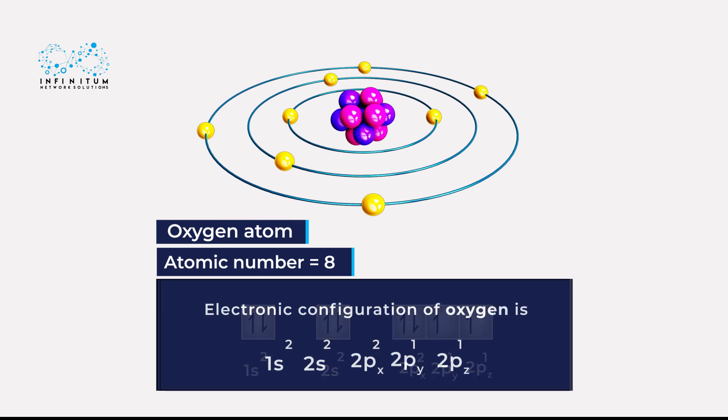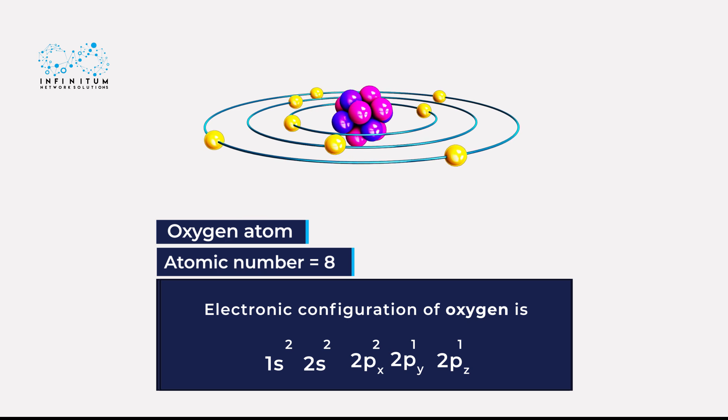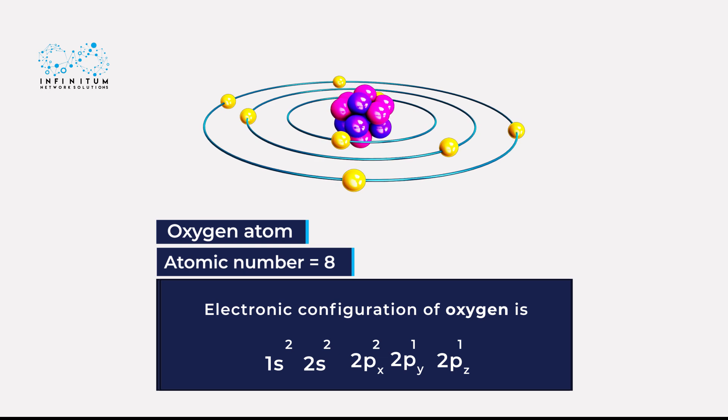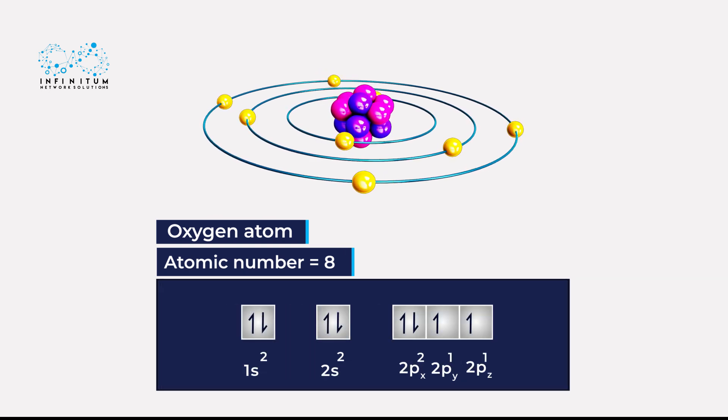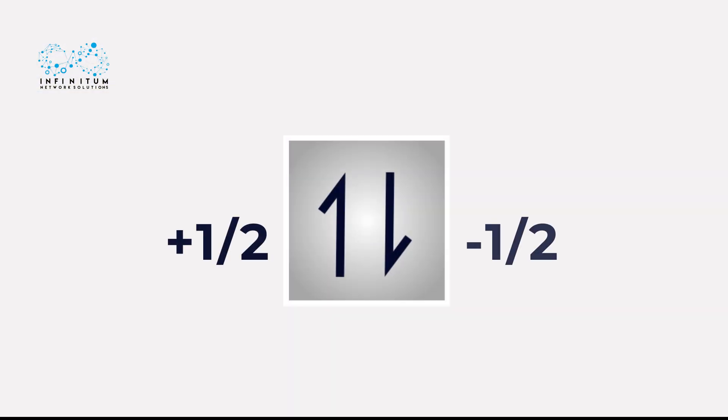So, the electronic configuration of oxygen can be written as 1s², 2s², 2px², 2py¹, 2pz¹. The arrows indicate the electrons with a spin plus one-half and minus one-half.